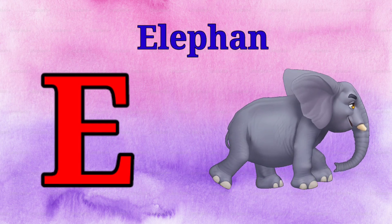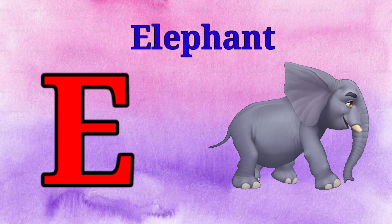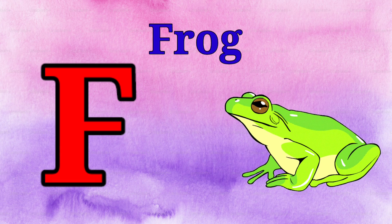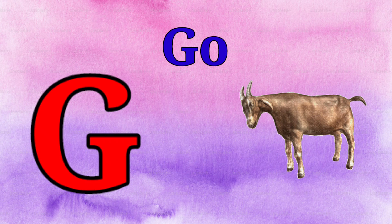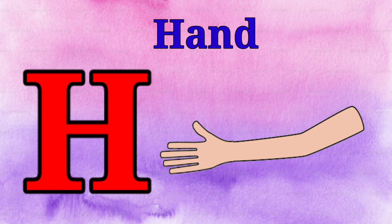E is for elephant, e-e-elephant. F is for frog, f-f-frog. G is for goat, g-g-goat. H is for hand, h-h-hand.